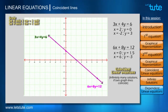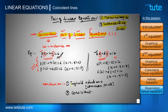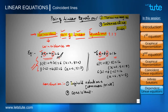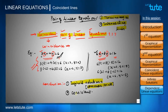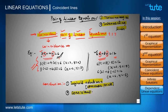In conclusion, in the case of a coincident pair of linear equations, we get an infinite number of solutions, that is, an infinite number of common points. Since we got solutions for these two linear equations, they are called consistent linear equations. They are also called dependent linear equations.